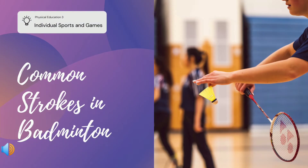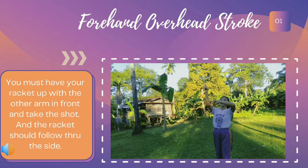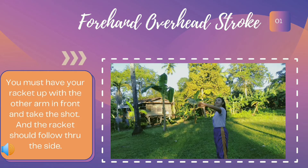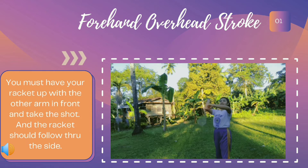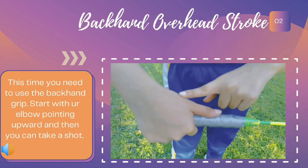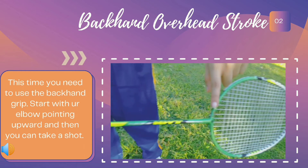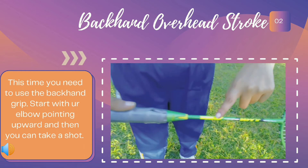For the common strokes in badminton, we have the forehand overhead stroke. You must have your racket up with the other arm in front, take the shot, and the racket should follow through the side. This is how you do the forehand overhead stroke.